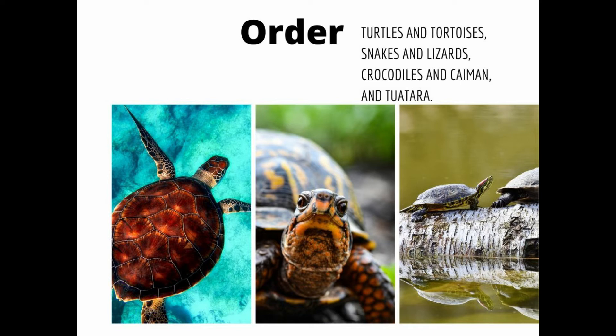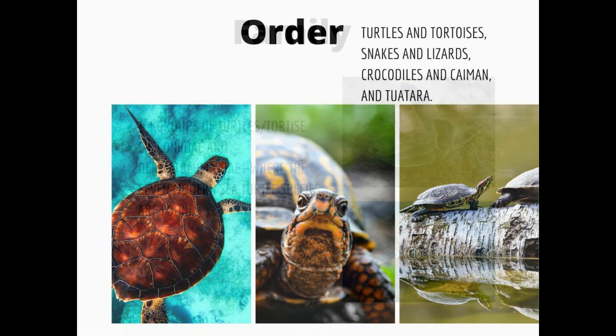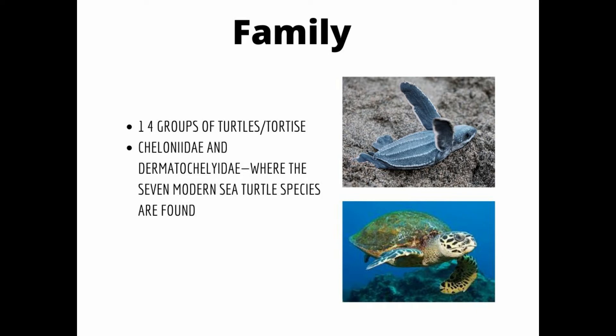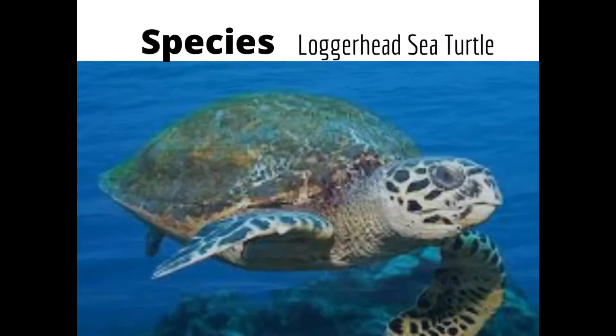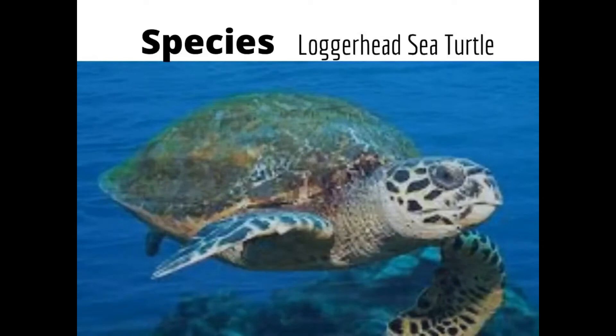We're looking at all turtles and tortoises on this page. Getting even more specific, we're looking at certain families of turtles and tortoises — specifically sea turtles. We have two different types of sea turtles here: a loggerhead on the bottom and a leatherback on the top. Now we get to the very specific species. This species is called the loggerhead sea turtle. We have organized our animals and followed the classification all the way down to one specific animal.